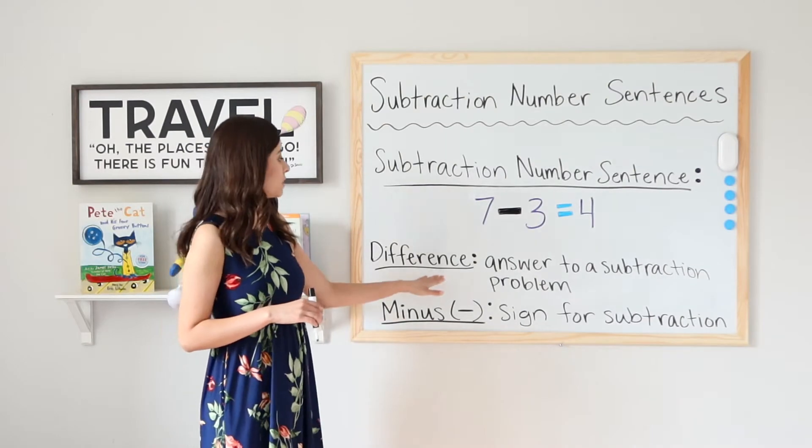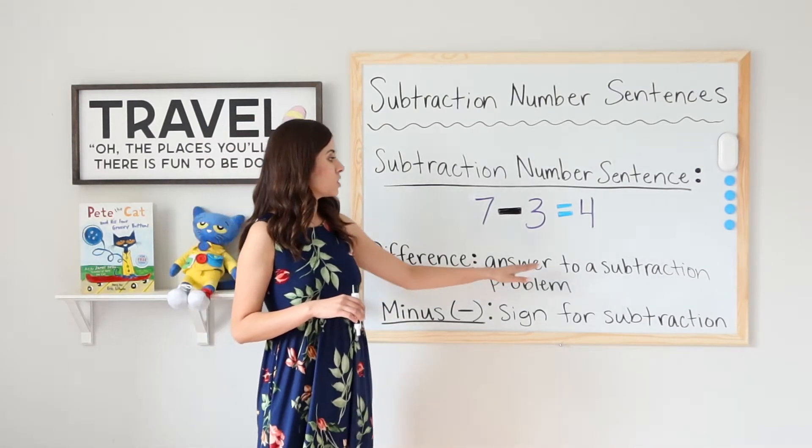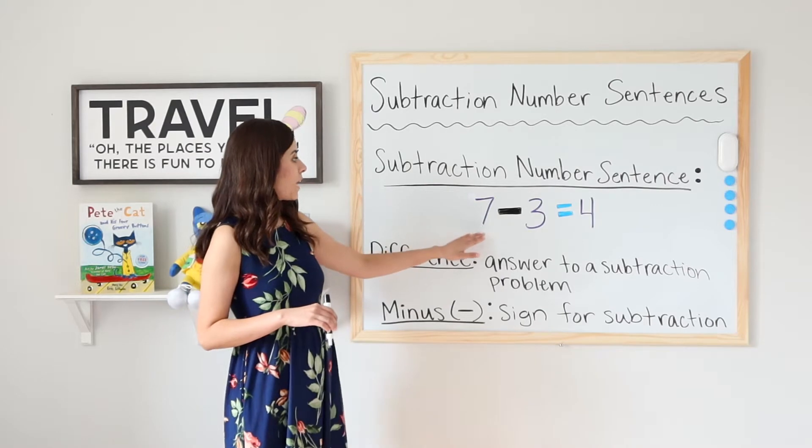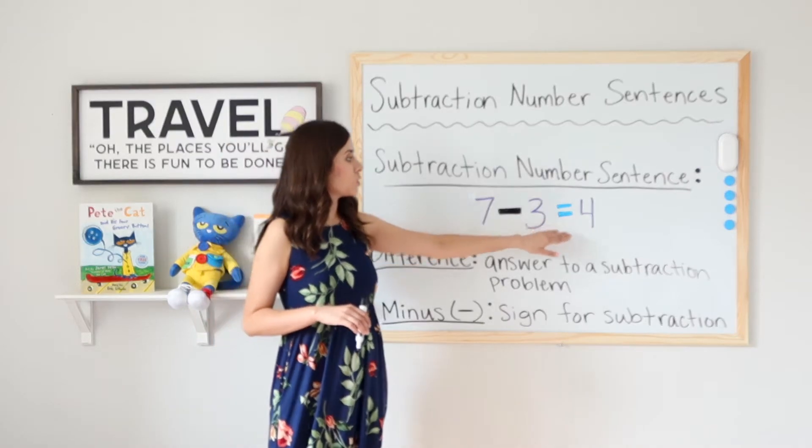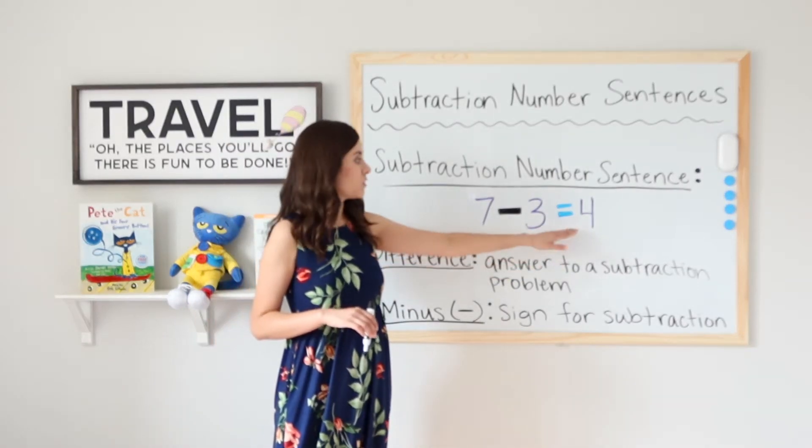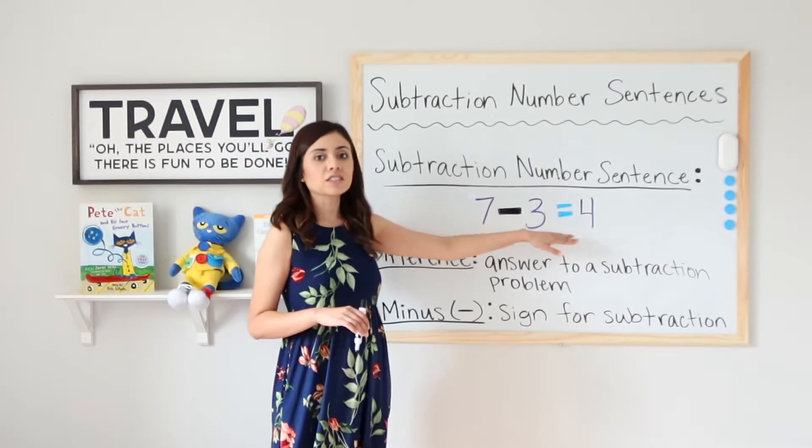The next one says difference. That is the answer to a subtraction problem. Up here I have 7 minus 3 equals 4. My answer is 4. 4 is called the difference.